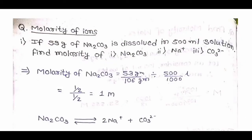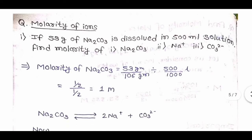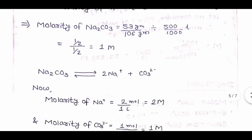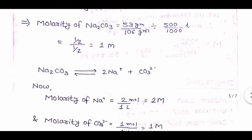Molarity of ions: if 53 grams of Na2CO3 (molar mass 106 g) is dissolved in 500 mL solution, find the molarity of Na2CO3, Na⁺ ion, and CO3²⁻ ion. Number of moles of Na2CO3 = 53/106 = 0.5 mol. Volume = 500/1000 = 0.5 L. Molarity of Na2CO3 = 0.5/0.5 = 1 M.